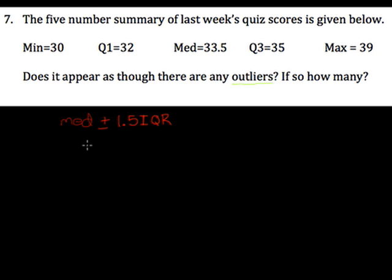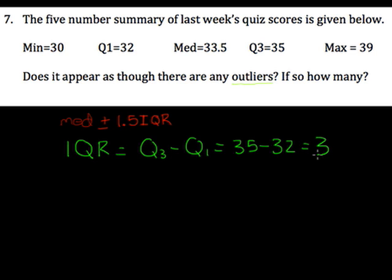Our IQR comes from Q3 minus Q1. So that's 35 minus 32, which gives us an IQR of 3. Now, if we multiply that times 1.5, we get 4.5. Okay, you can check it with a calculator.